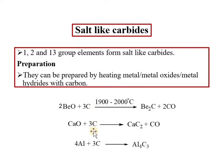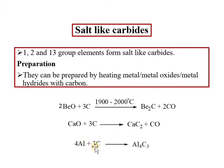The methods of preparation for metal carbides include: reacting a metal oxide with carbon at high temperature, reacting a metal hydride with carbon, or reacting the metal directly with carbon. Simply put, when a metal, metal oxide, or metal hydride is heated with carbon at high temperature, they form metal carbides.